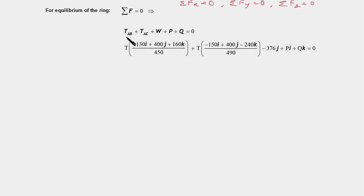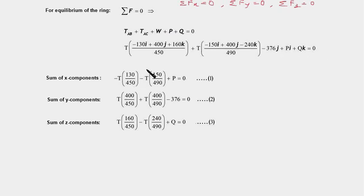So we first sum all these forces. And from the previous slide we have just copied here TAB, TAC, W is minus 376j, P is Pi, and force Q is Qk. So all these five forces are in vector form, and they should be equal to zero for equilibrium. So our next step would be to club all the i components of this equation.